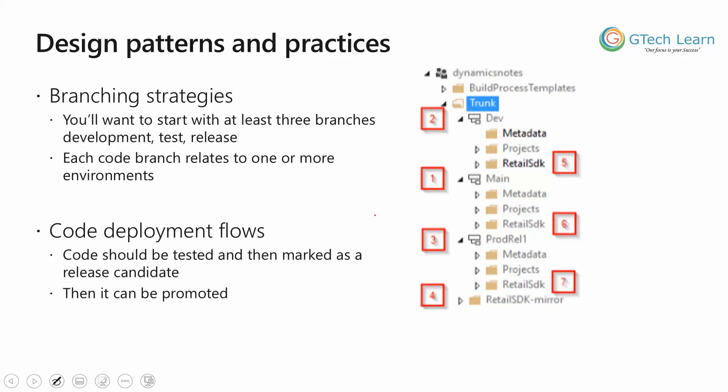As a developer, when my design pattern, coding pattern, and best practices are concerned, I should always have my environmental approach available. As you can see on this project structure, I have my developer branching, my main branch, my production release, and sometimes a UAT branch as well. When talking about code branching strategies, you should at least go with dev, test, and release, and if possible go with UAT and staging as well. Each code branch relates to one or more environments. Whenever you do work on your dev branch, you test that particular code, and once that is successful, mark it as a release candidate and then promote it to the next available branch.